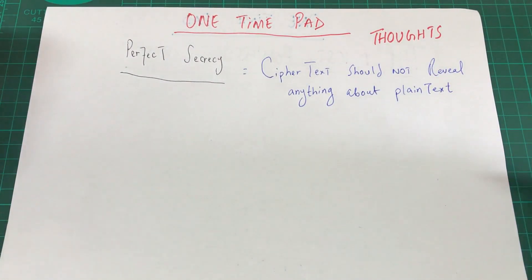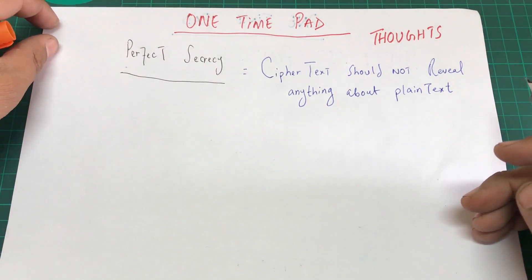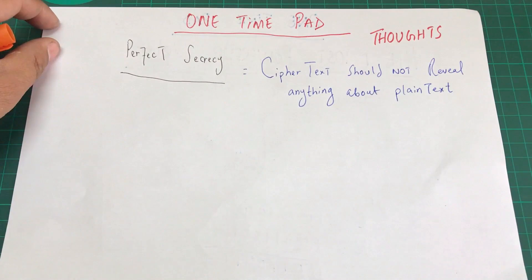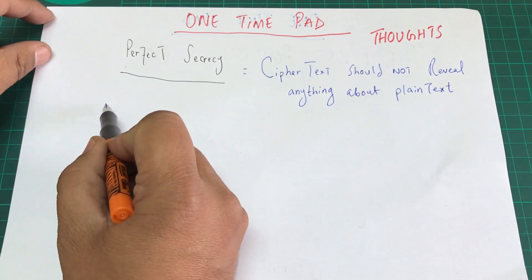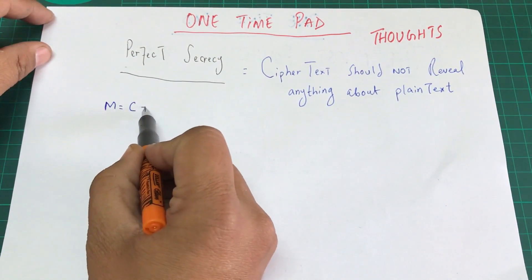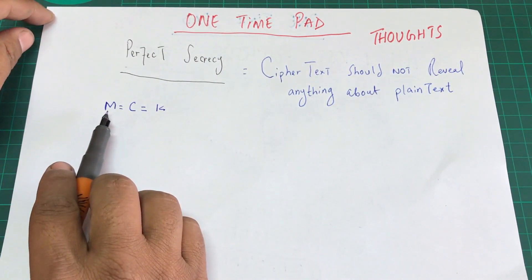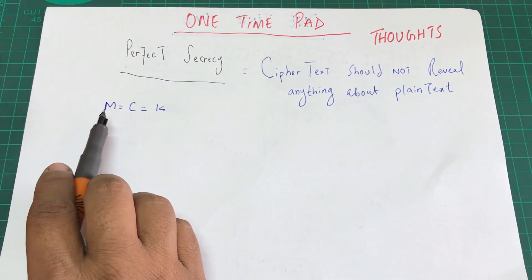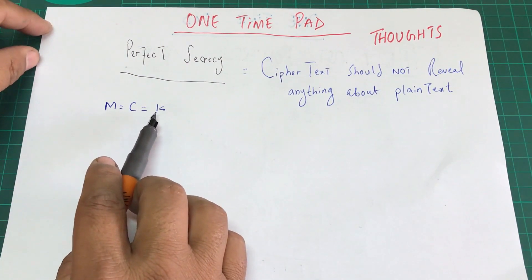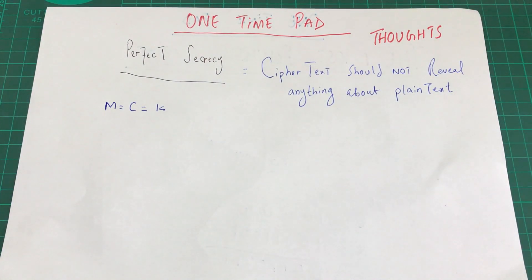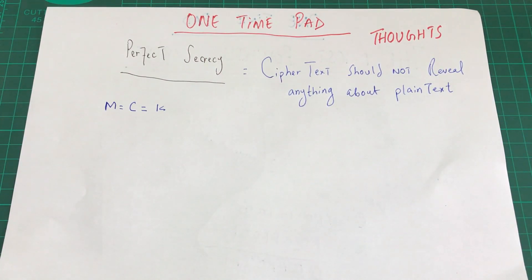We achieve perfect secrecy using one-time pad. In one-time pad, the message length equals the cipher text length, and the cipher text length equals the key length. So if I have eight characters in my cipher text, I need to choose a key that also has eight characters. When I XOR them together, I get the same eight-character cipher text back.